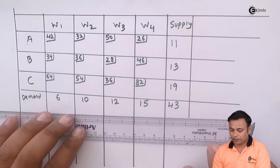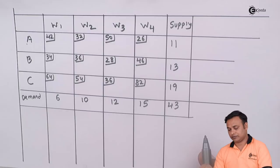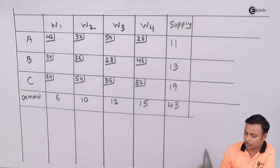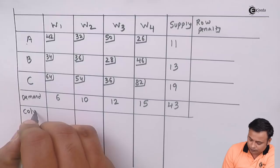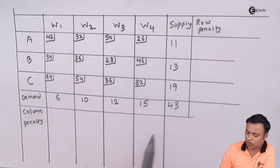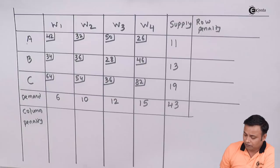Now we need to solve this problem by using Vogel's Approximation Method. Under this method we will make two additional columns called as row penalty and column penalty. They can also be called as row differences and column differences. Under this we are going to calculate certain penalties.